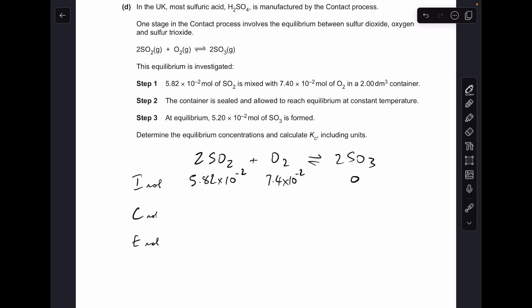Obviously initially we don't have any SO3, and then we're told at equilibrium there are 5.2 times 10 to the minus 2 moles of SO3 formed, so that's gone up by that amount.